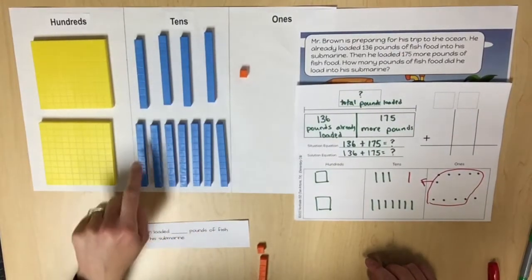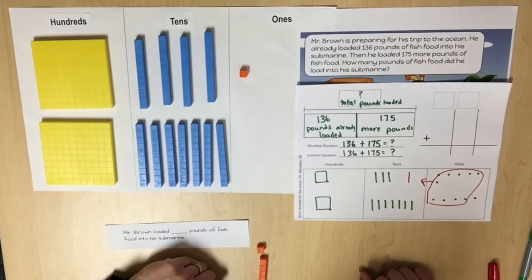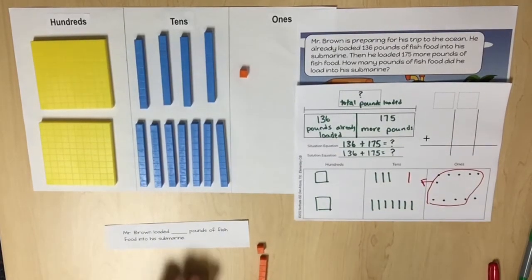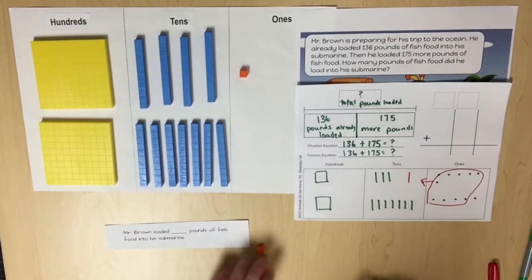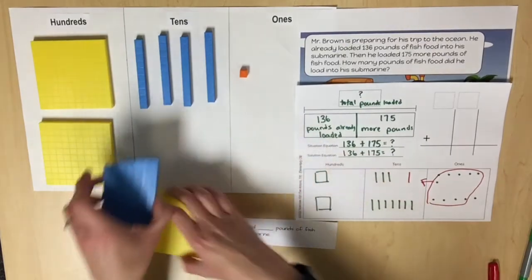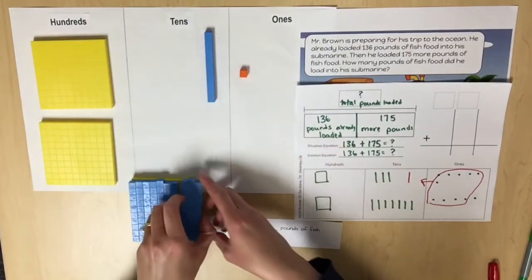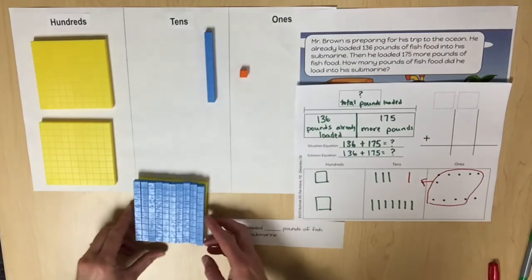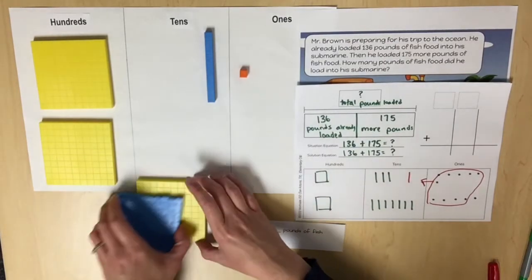Ask students to consider the 11 tens. Are there enough tens to compose 100? Model how to regroup 10 tens by showing that 10 tens are equivalent to 100. So we're able to regroup and compose 100.